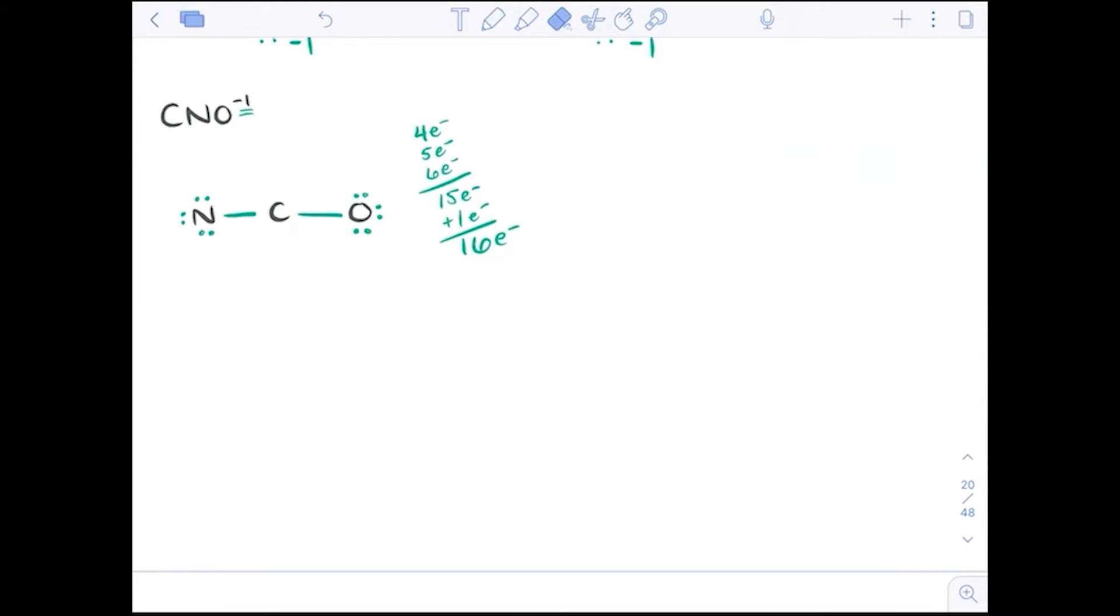Now what we can start seeing is we need to make some double and triple bonds. How would I know? Well, I could look first to the octet rule and say carbon doesn't have it, or I could look to formal charges and say this is a minus one, this is a plus two, and this is a minus two. So when we're looking at this, we know that we have to give some more to carbon.